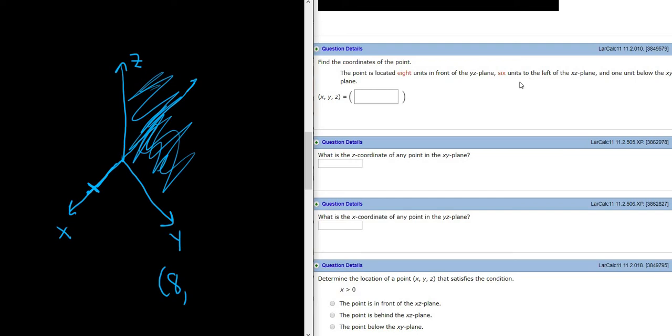6 units to the left of the XZ plane. So the XZ plane is right here, this is the XZ plane. So to the right of the XZ plane, we would be over here on the positive Y axis. To the left of the XZ plane, we would be over here on the negative Y axis. So 6 units to the left would be negative 6.